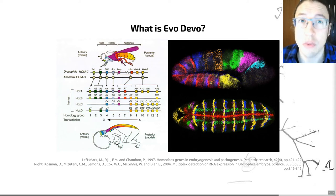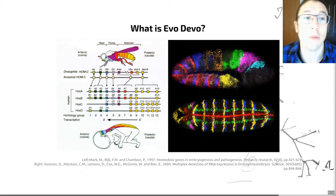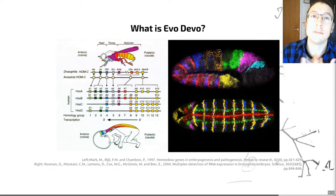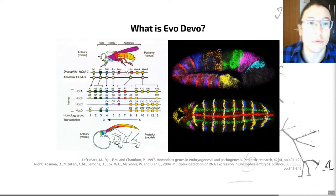EvoDevo is otherwise known as evolutionary developmental biology, and this uses the study of development in organisms to investigate evolutionary topics. It's looking at how organisms develop and seeing what that can tell us about the evolution of those organisms more broadly.